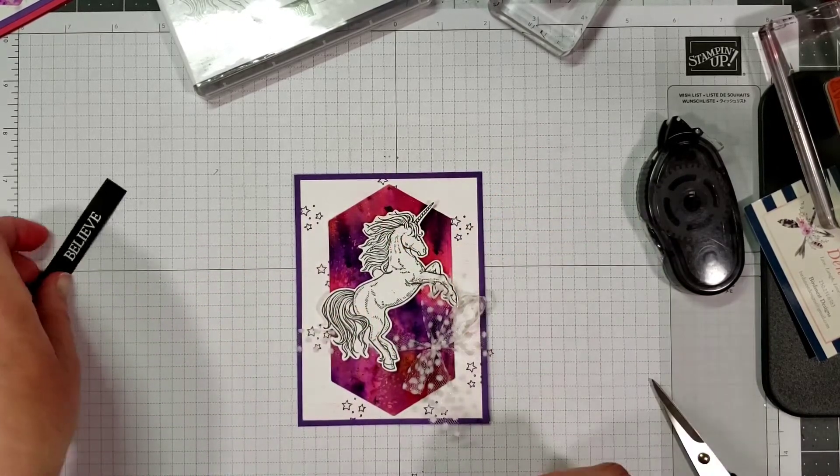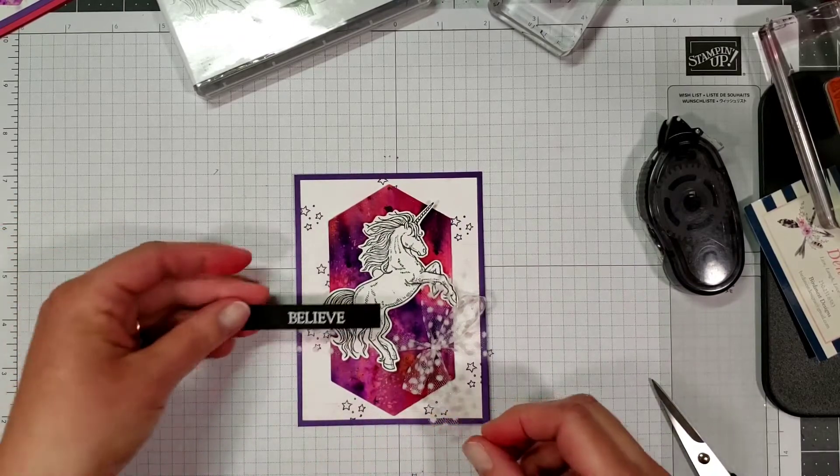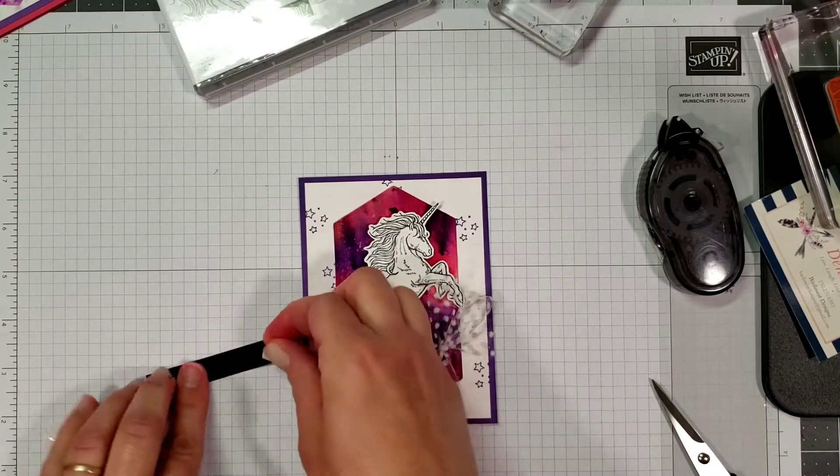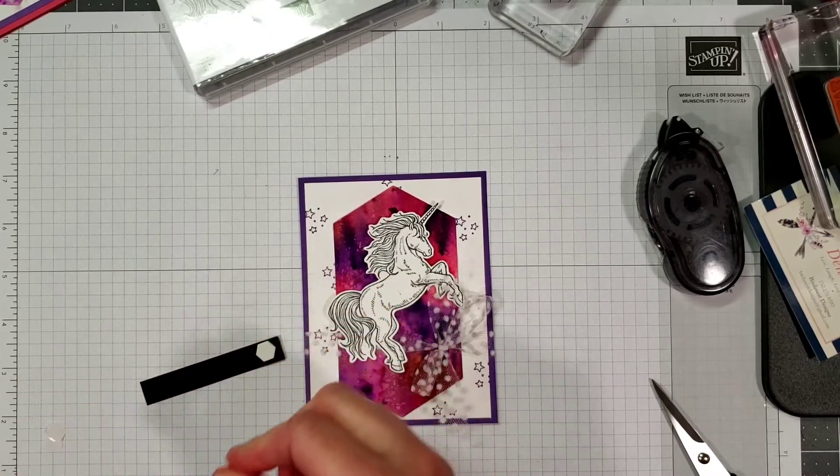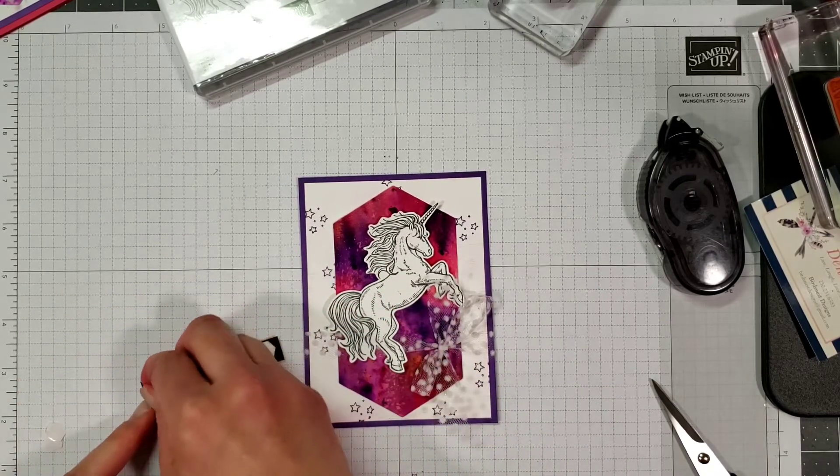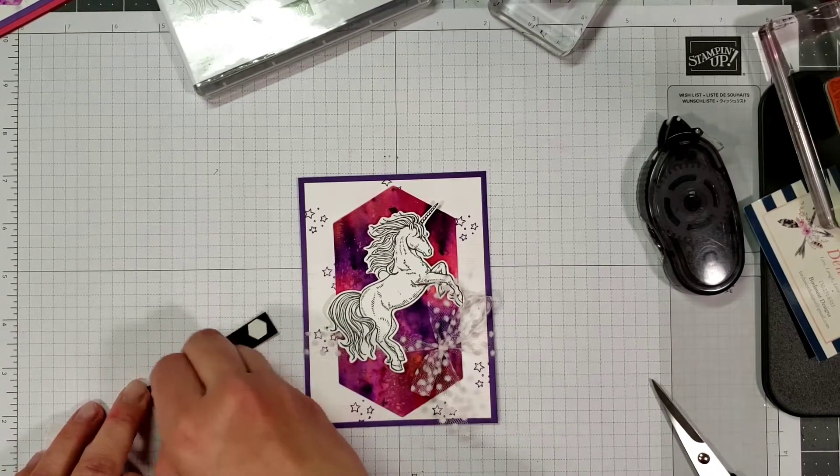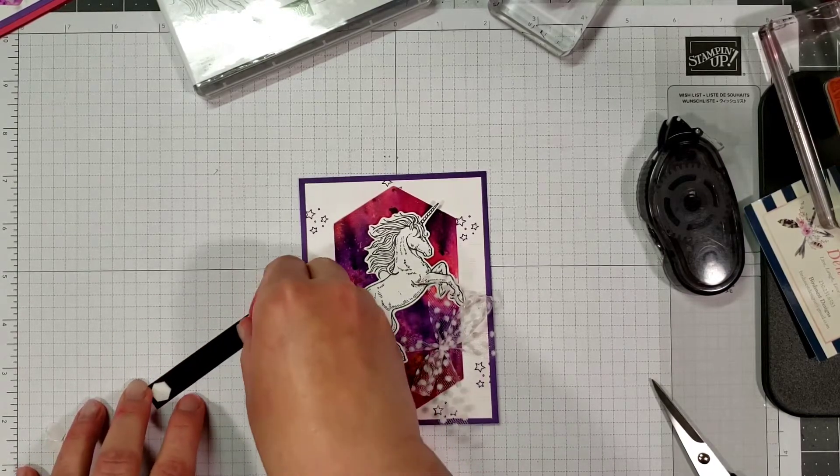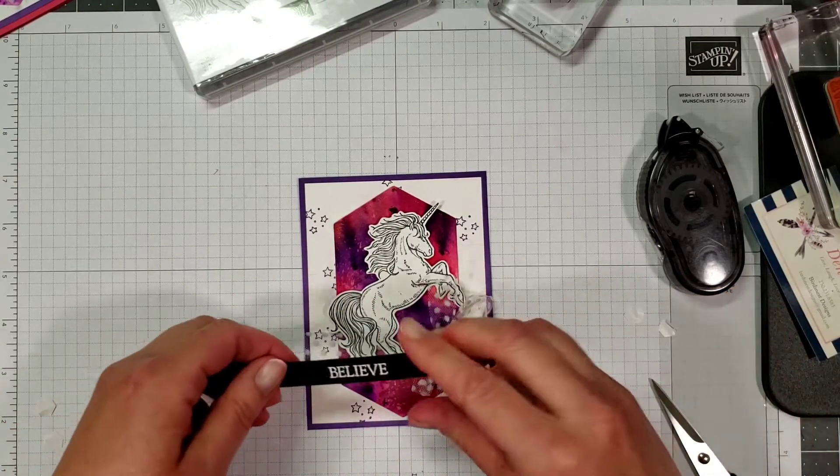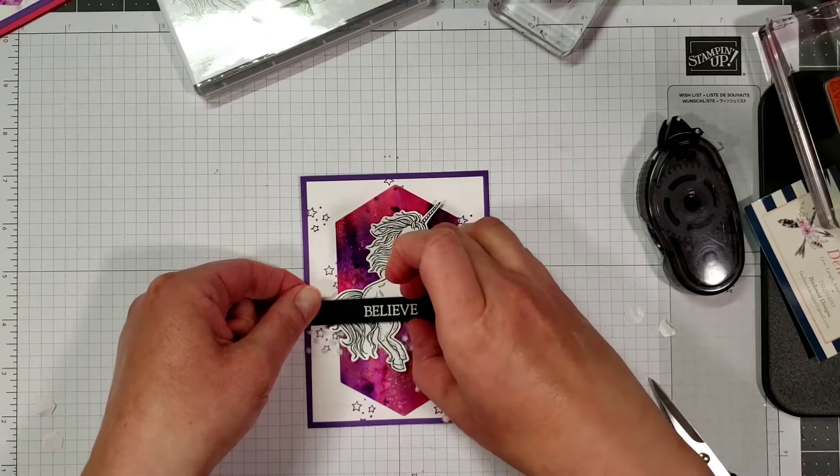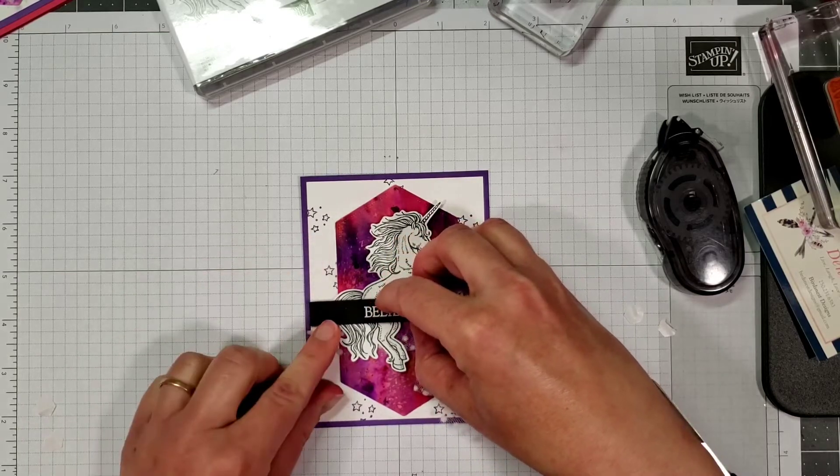We're going to take the believe sentiment and we're going to put a dimensional on either end. We're just going to put it in through here, line it up with the edge of the white paper on this end.